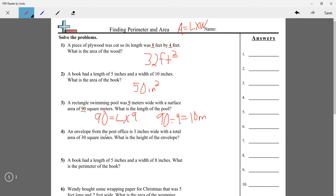An envelope from the post office is 3 inches wide with a total area of 30 square inches. What is the height of the envelope? Height would just be another term for length. We're doing the same thing, just dividing because they gave us the area and one of the sides. So it would be 30 divided by 3, which also equals 10 inches.